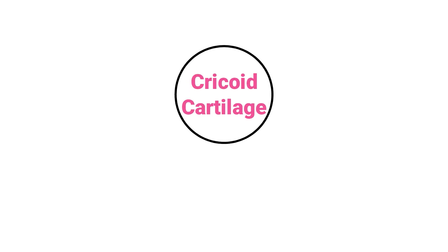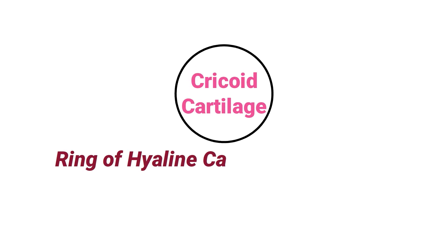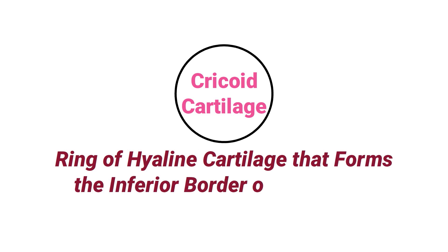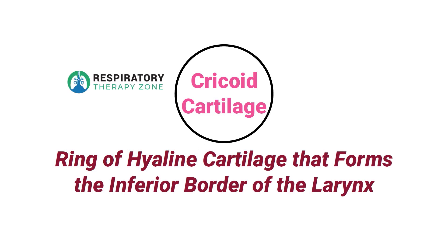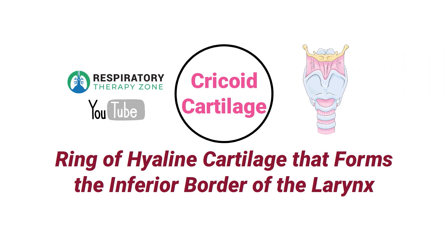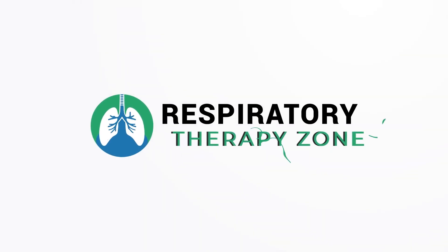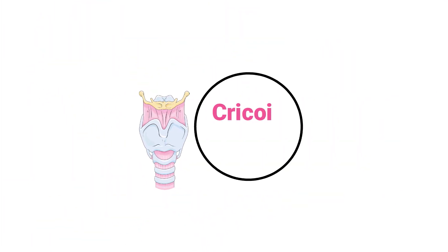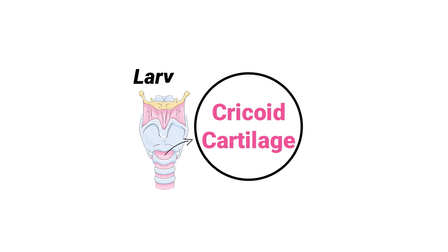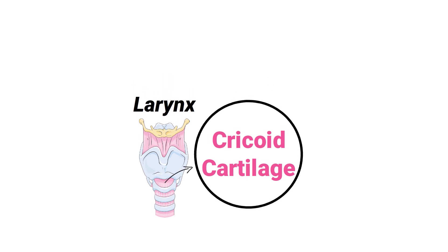Cricoid cartilage is a ring of hyaline cartilage that forms the inferior border of the larynx. We created this video to cover the medical definition and provide a brief overview of this topic. As previously mentioned, cricoid cartilage is a ring of cartilage that forms the lower border of the larynx, anatomically speaking.